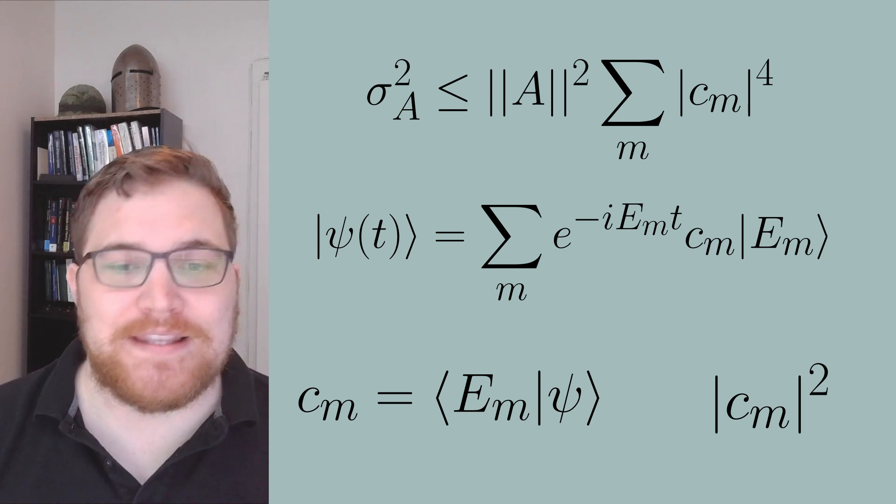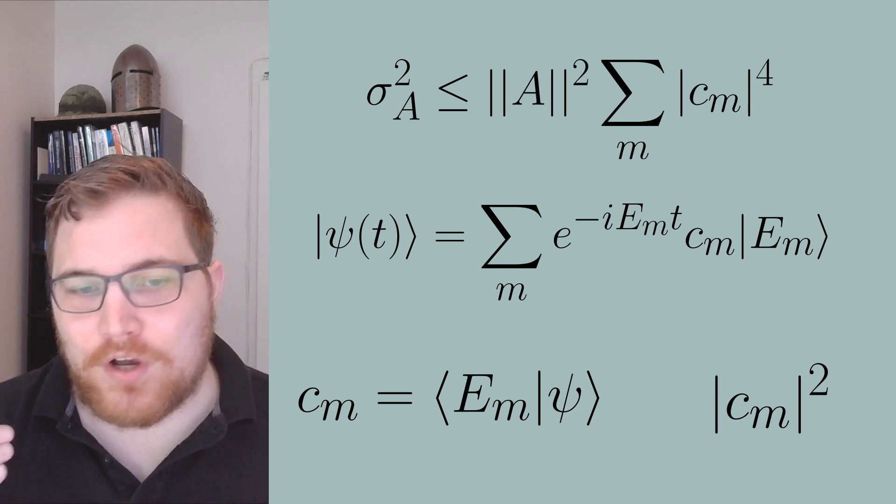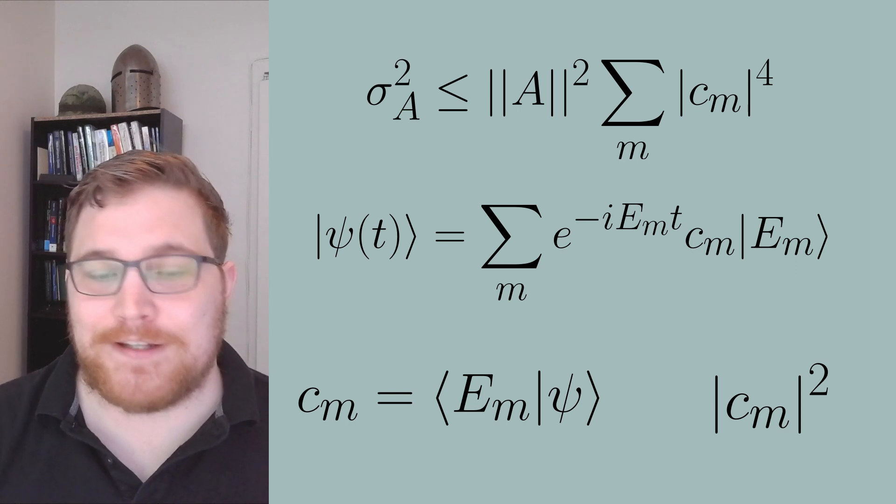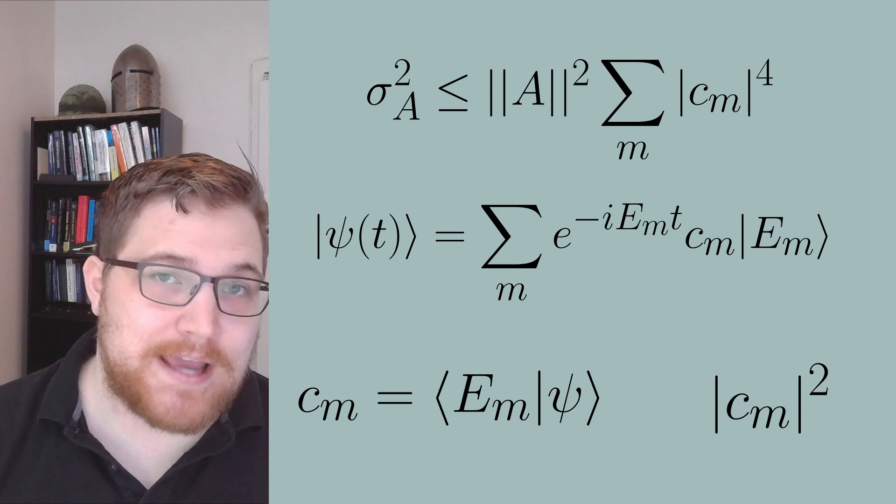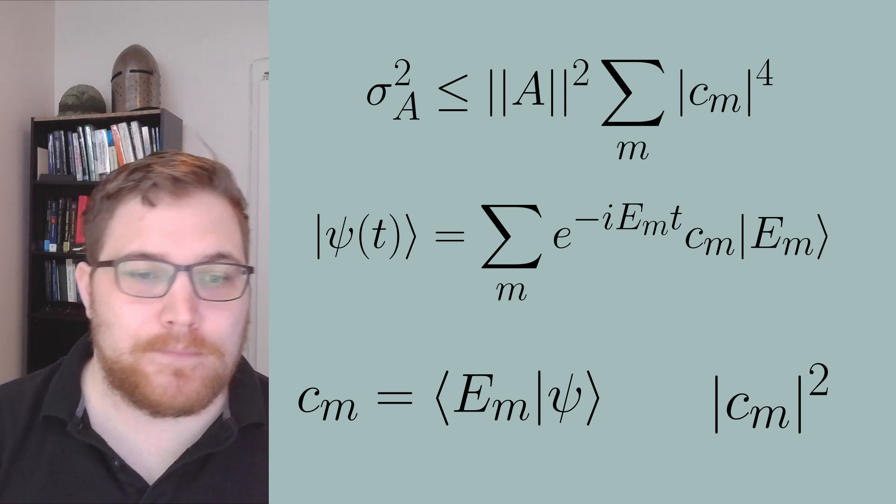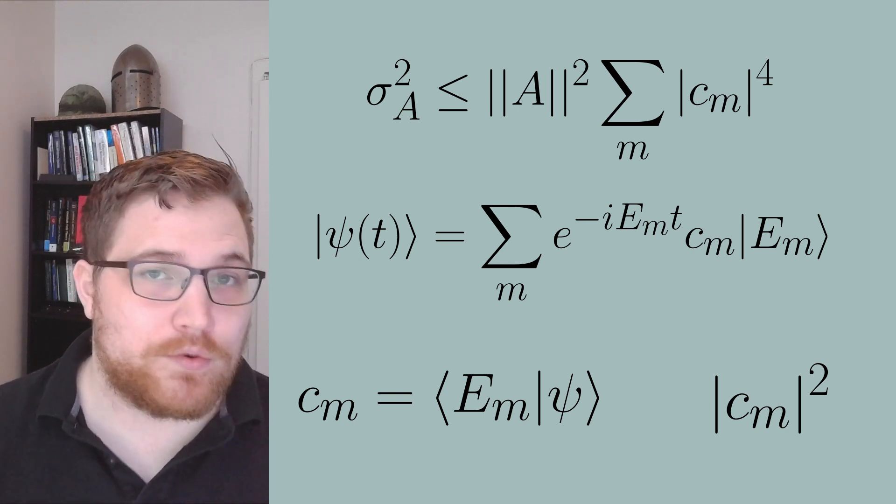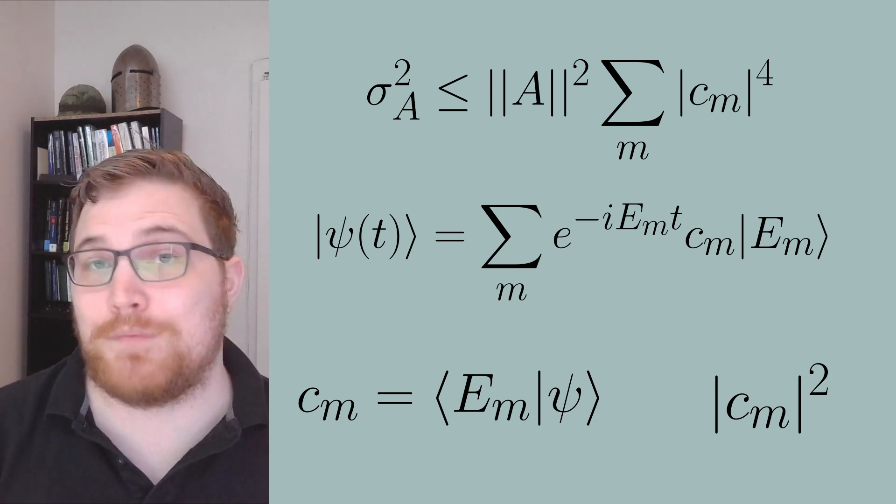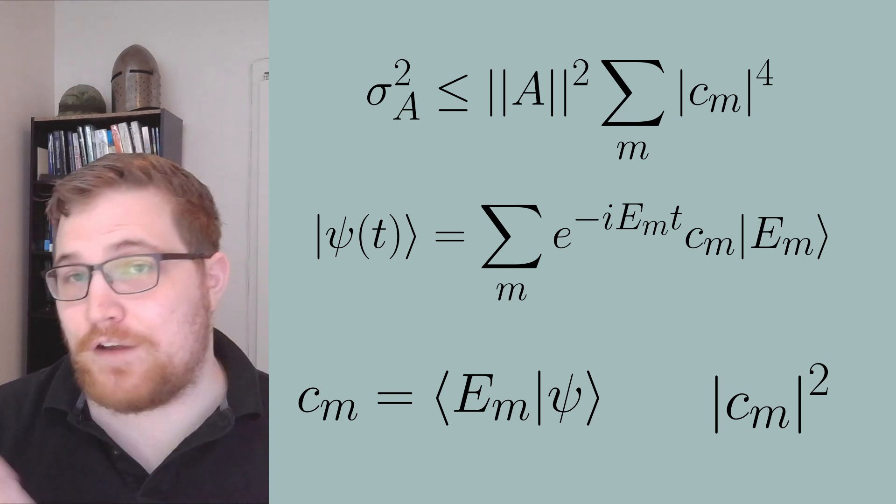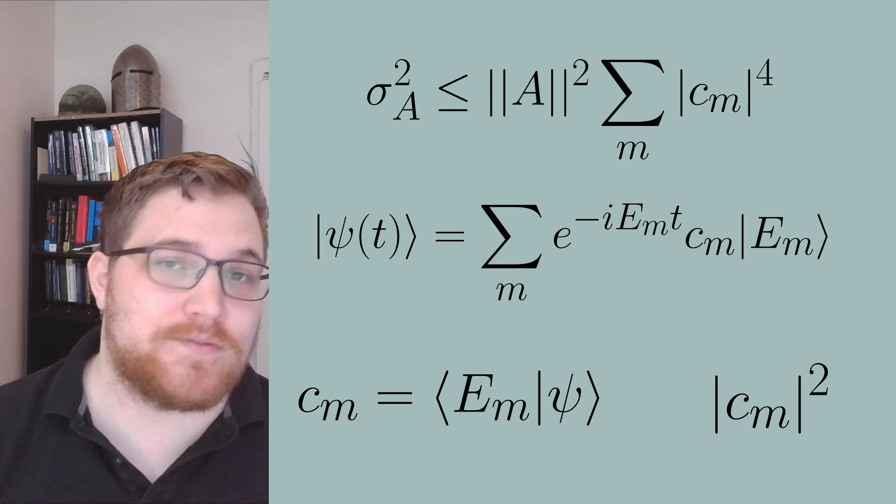Then the intuition is the following. If we have a lot of energy eigenstates participating in the dynamics in a meaningful way, meaning that the corresponding c_m's aren't too small relative to the other ones, then the sum of the squares of the probabilities should be extremely small. And for a lot of situations, that seems to be the case.